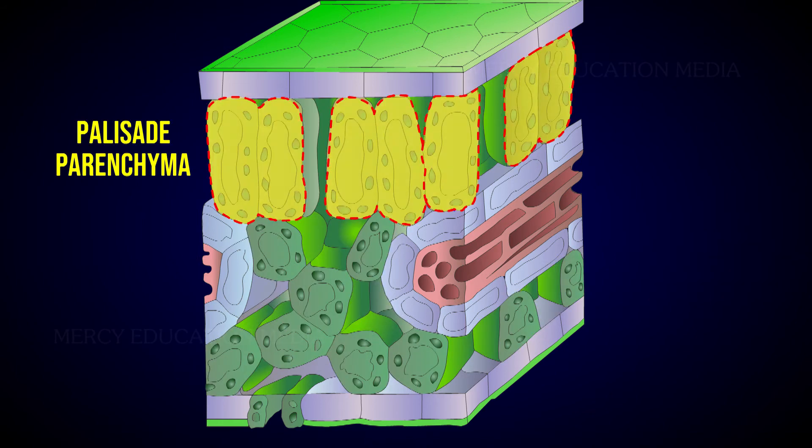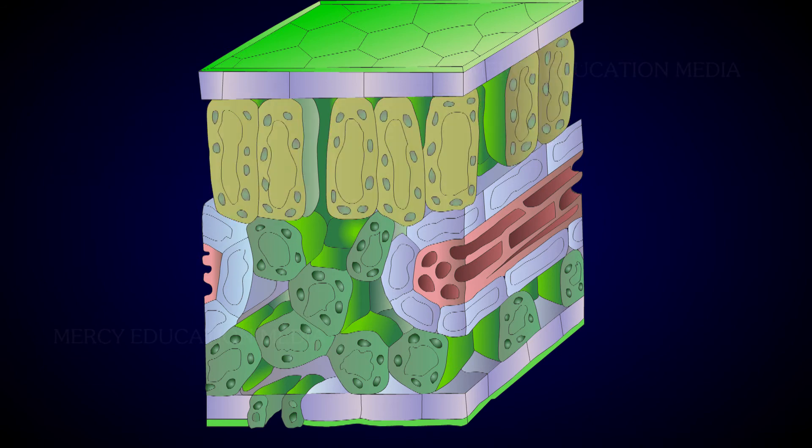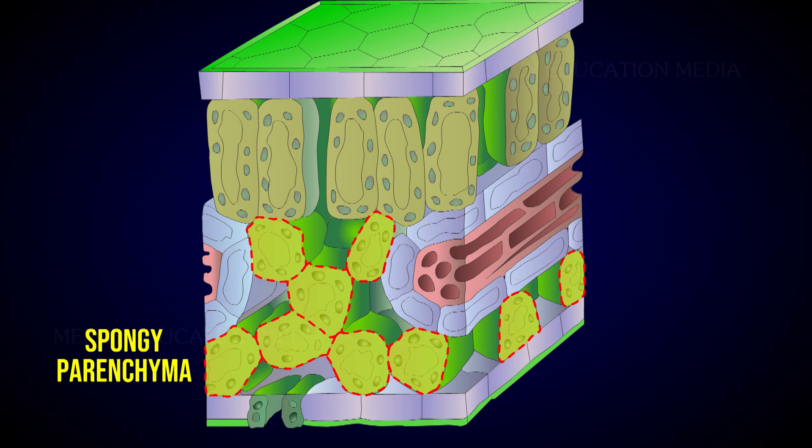Often it is differentiated into palisade parenchyma on the adaxial (upper) side and spongy parenchyma on the abaxial (lower) side.